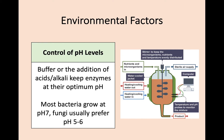Finally, we need to keep pH levels at an optimal level. Just like temperature, this entirely depends on the microorganism being used. For example, most bacteria grow around a neutral pH of 7, while fungi usually prefer a more acidic pH of 5 or 6. To keep the pH at its optimum level we use a buffer to stabilize the pH, or we can add more acid or more alkali throughout the process.